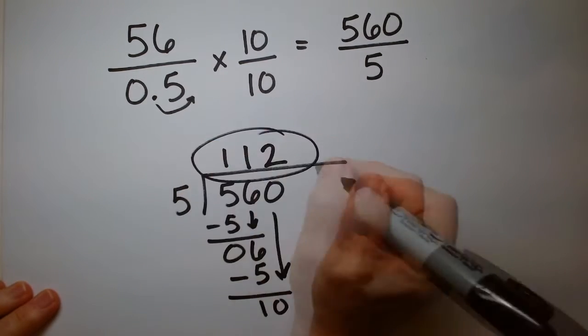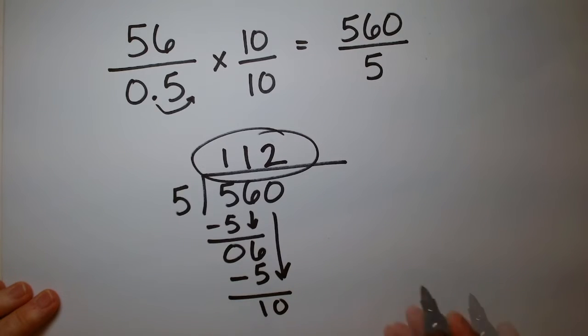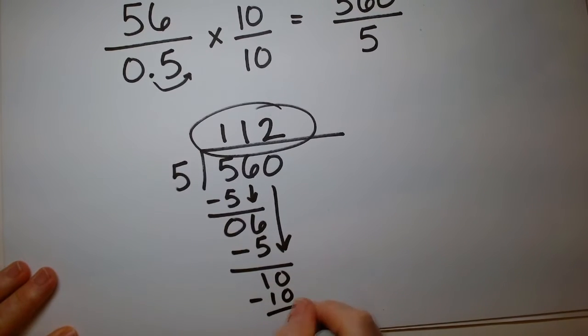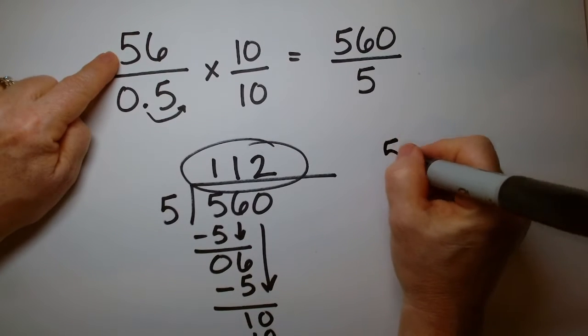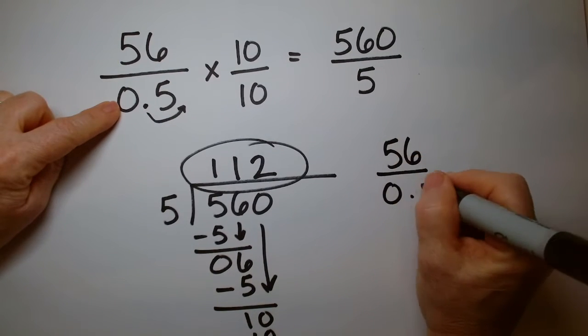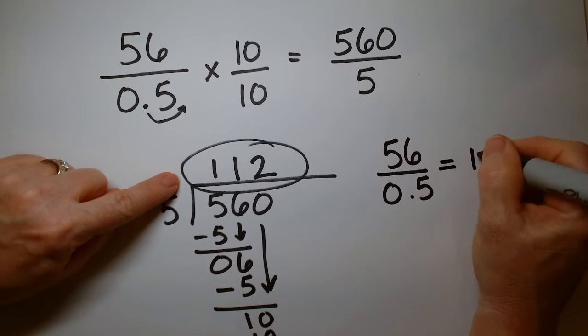So my answer is 112. Because this is even, there's nothing left over. My original problem, 56 over 0.5, is equal to 112.